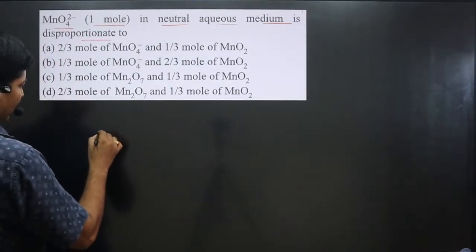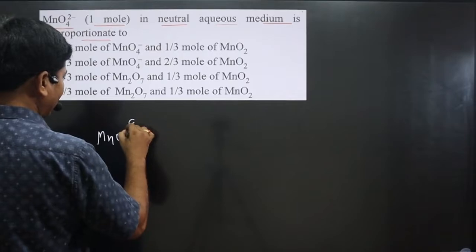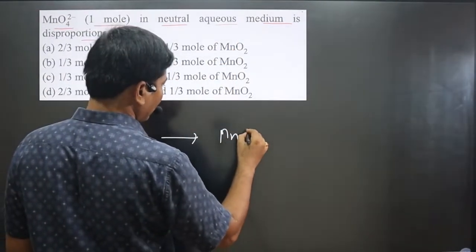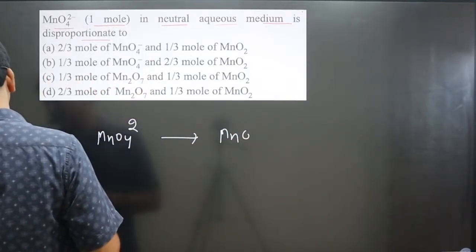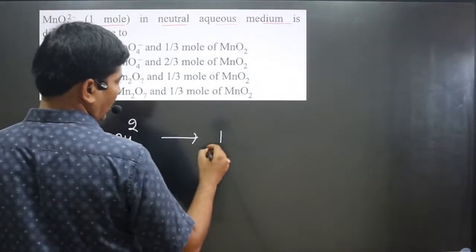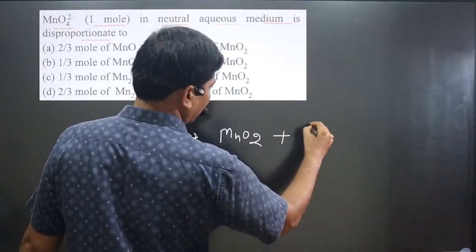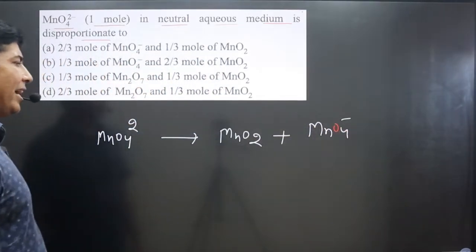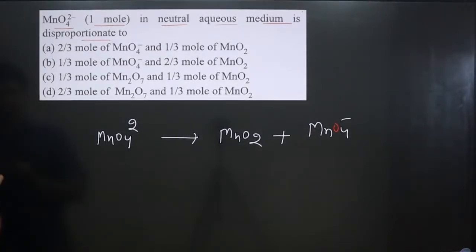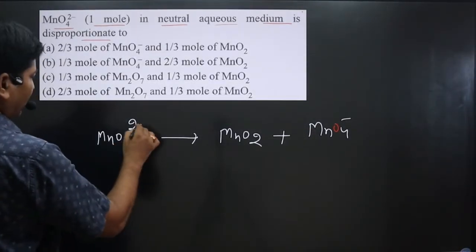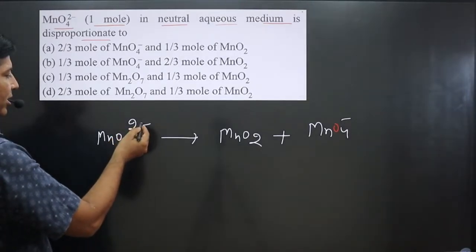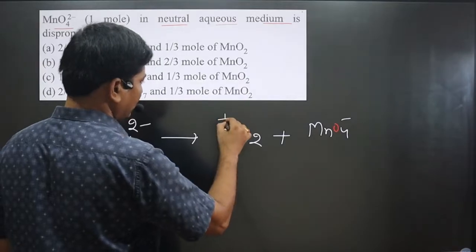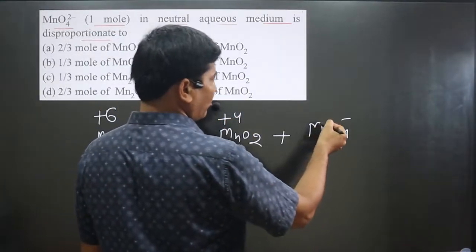We have MnO₄²⁻. In neutral aqueous medium, it is converting into MnO₂, and it will also convert into MnO₄⁻. Now we write down the oxidation numbers of the same element. In MnO₄²⁻, manganese is in plus six oxidation number. On the other side, in MnO₂, manganese is in plus four oxidation number, and in MnO₄⁻, it is in plus seven oxidation number.